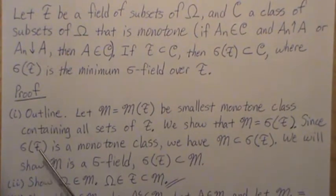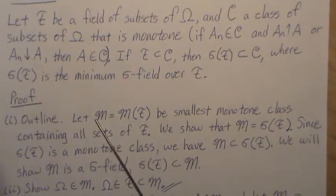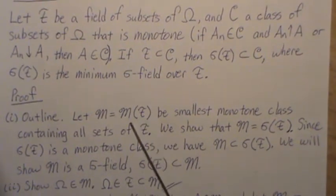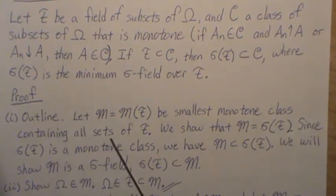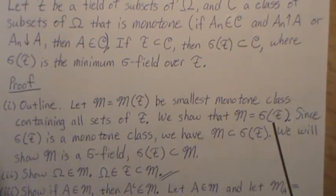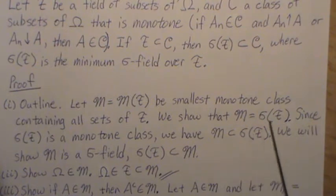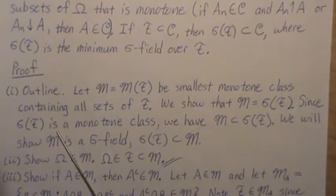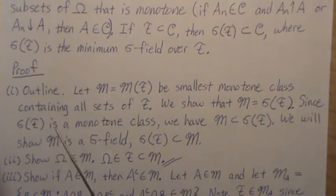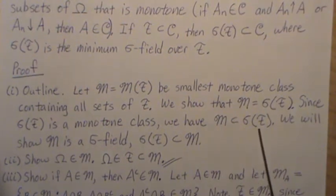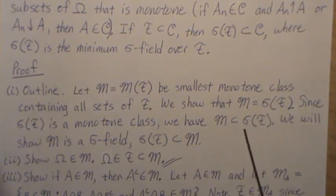We're going to prove this in five steps. Let M = M(F), the smallest monotone class containing all sets of F. We're going to show that M equals σ(F) — that the smallest sigma field generated by F and the smallest monotone class generated by F are equal. Since a sigma field is a monotone class (it's closed under infinite unions and intersections), M is a subset of σ(F).